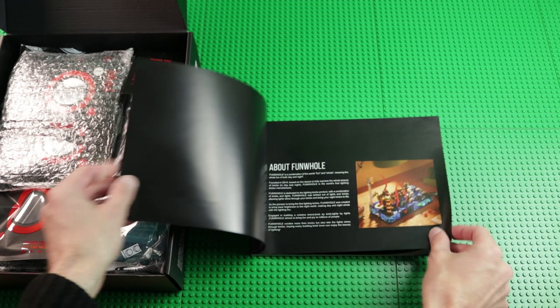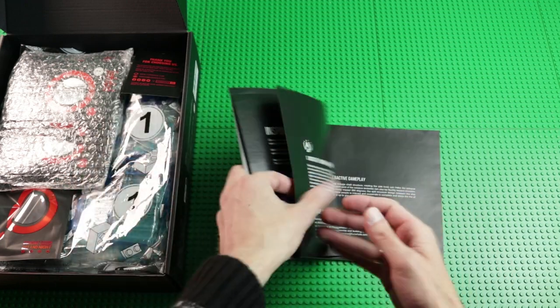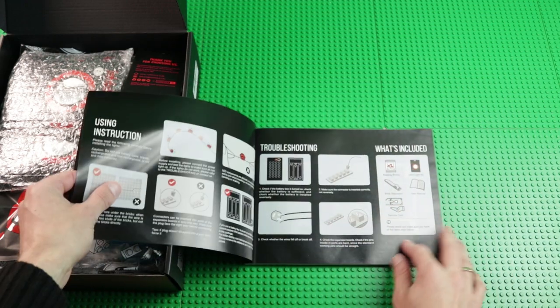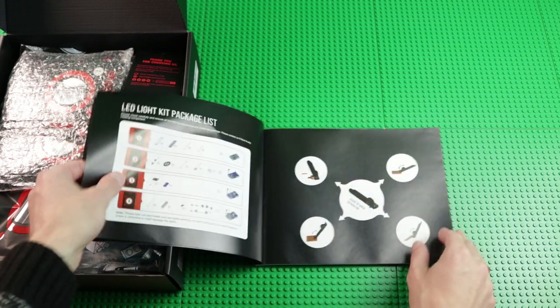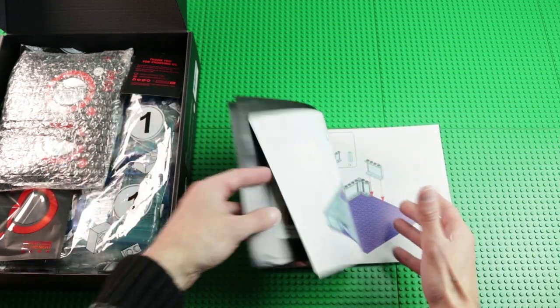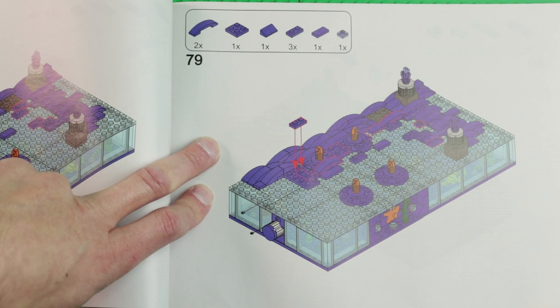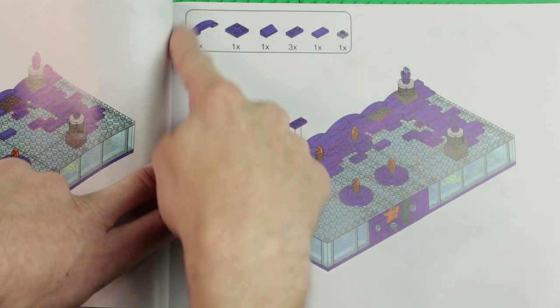If you would read the instruction carefully, among other things you would get to know a story explanation and several do's and don'ts for the electric parts. Each building step has an overview with the bricks to be used.